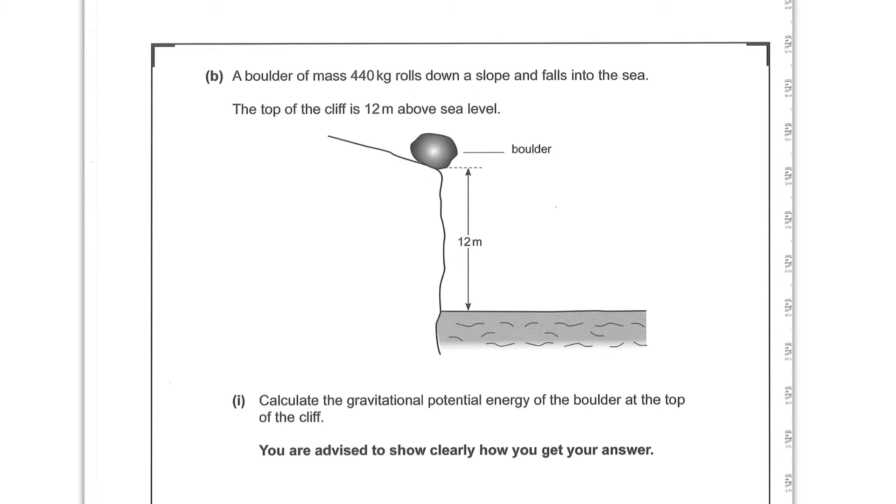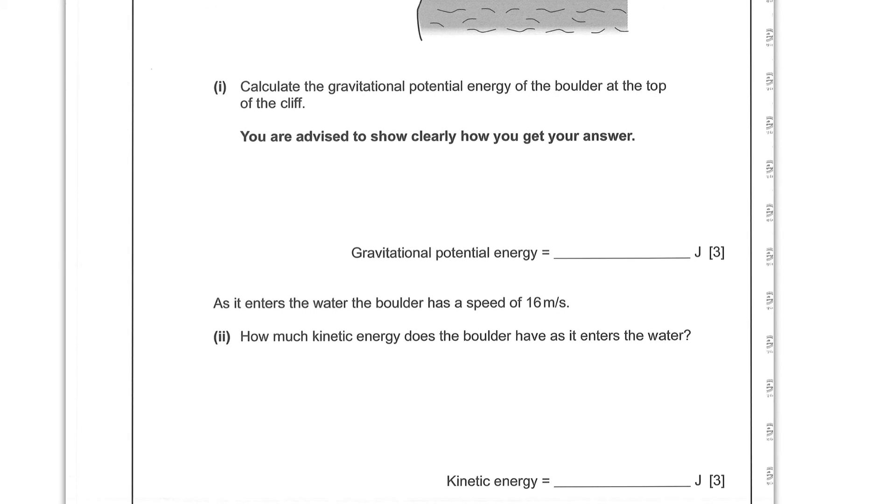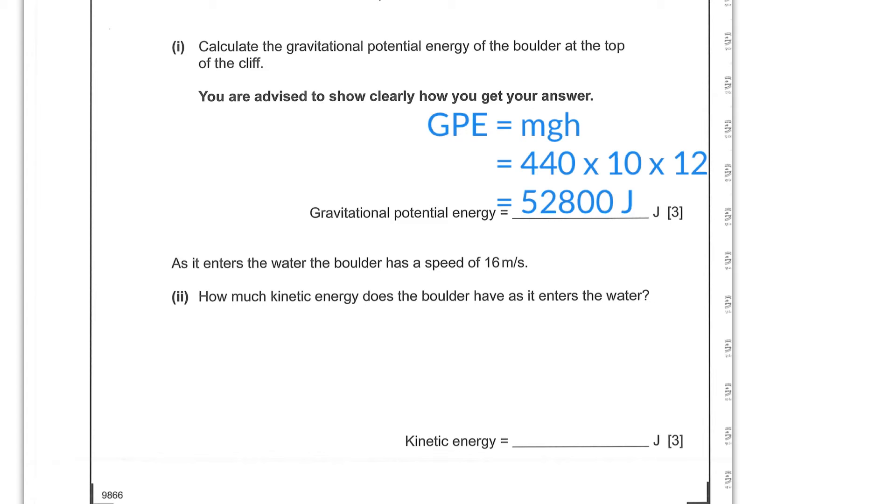Part B: A boulder of mass 440 kilograms rolls down a slope and falls into the sea. The top of the cliff is 12 meters above sea level. Calculate the gravitational potential energy of the boulder at the top of the cliff. So gravitational potential energy has an equation: GPE equals MGH and that's our starting point for our calculation. So gravitational potential energy equals MGH: 440 times 10 times 12 gives us 52,800 joules.